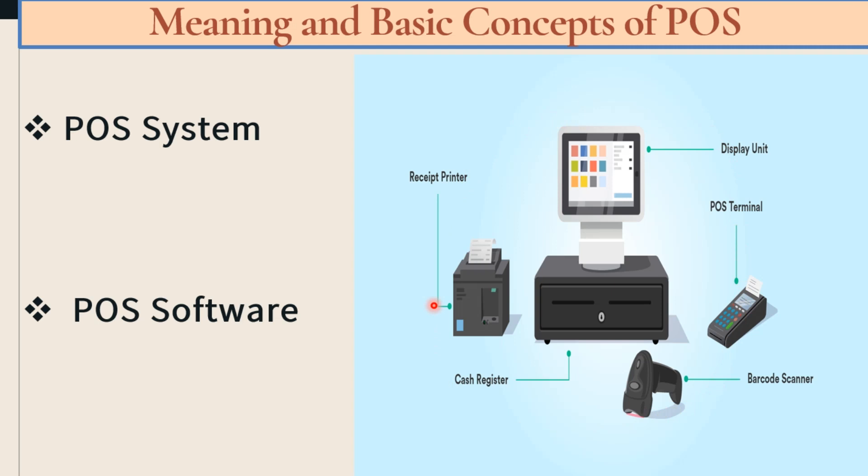Software is a type of application which is used to perform a specific transaction or function when a command is given. After the command is given, the system performs a specific function with the help of that particular software. So the point-of-sale system is the combination of hardware and software used for billing or to complete a particular transaction in a shop.